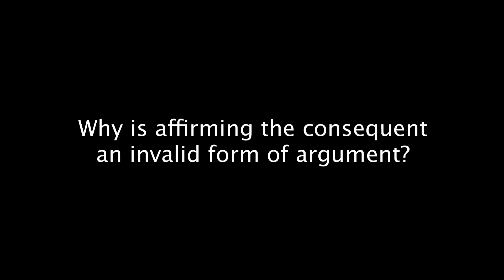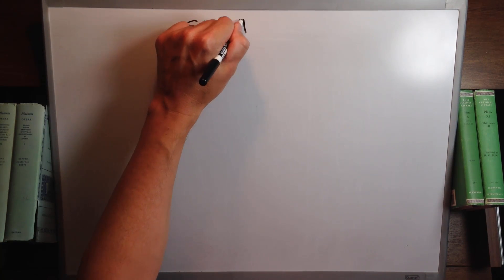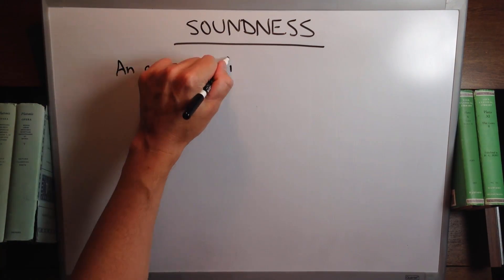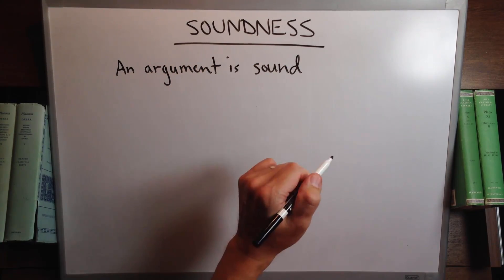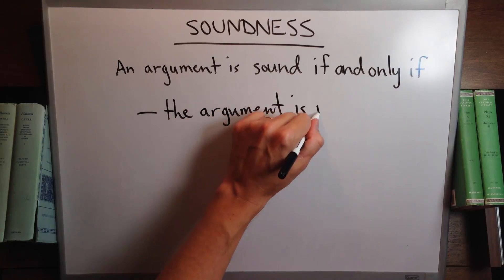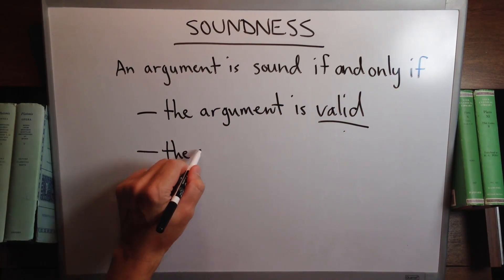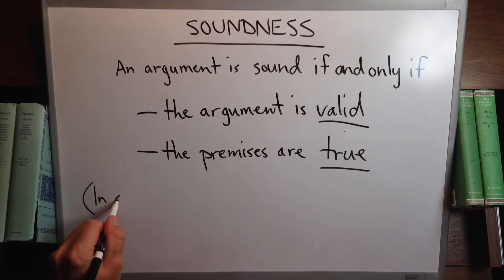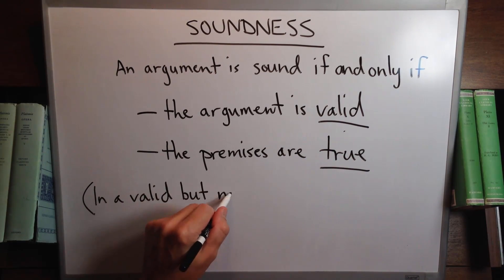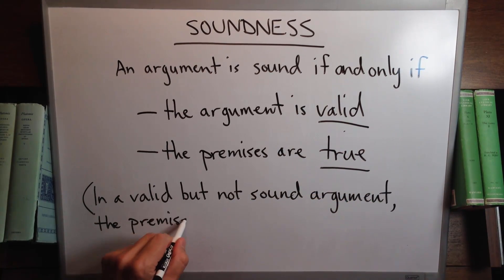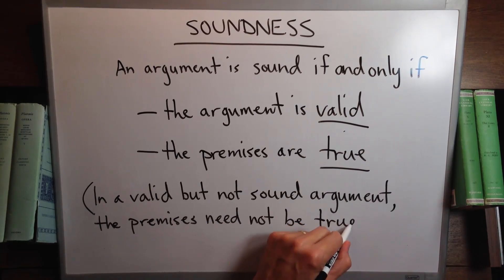Affirming the consequent is an invalid form of argument because the consequent is a necessary condition, not a sufficient condition, for the antecedent. Turning now to soundness: an argument is sound if and only if two conditions hold. First, the argument is valid. Second, the premises of the argument are true. This means that in a valid but not sound argument, the premises need not be true.